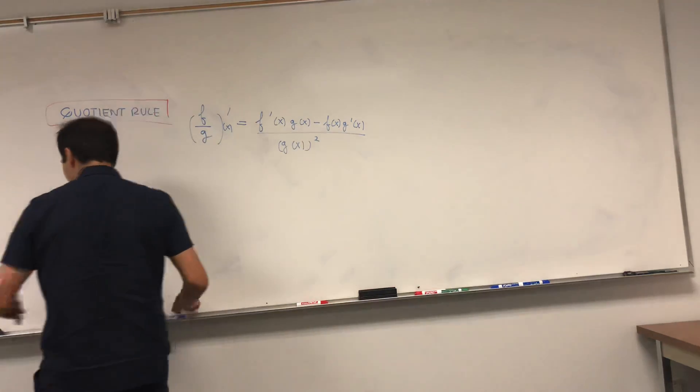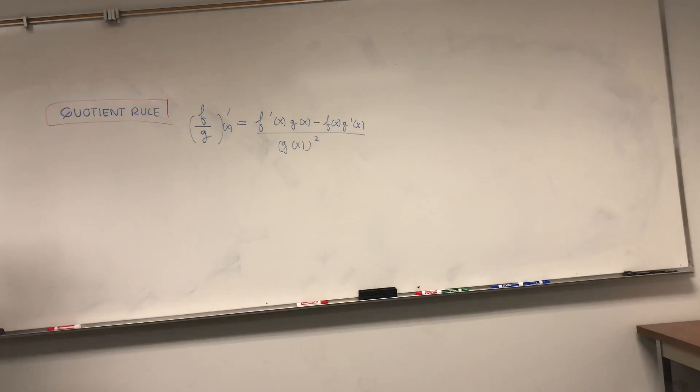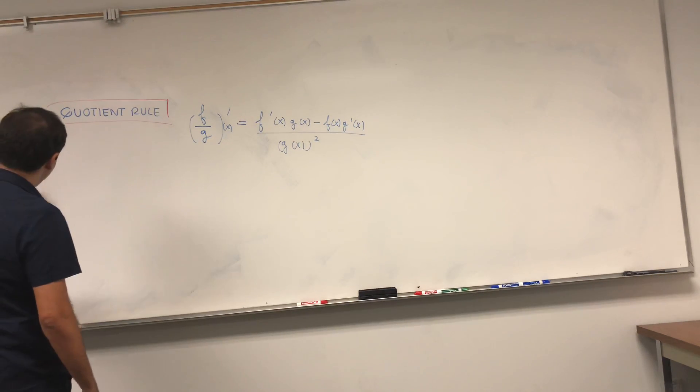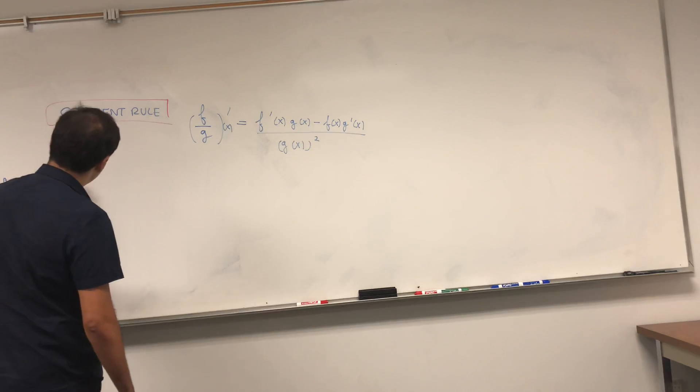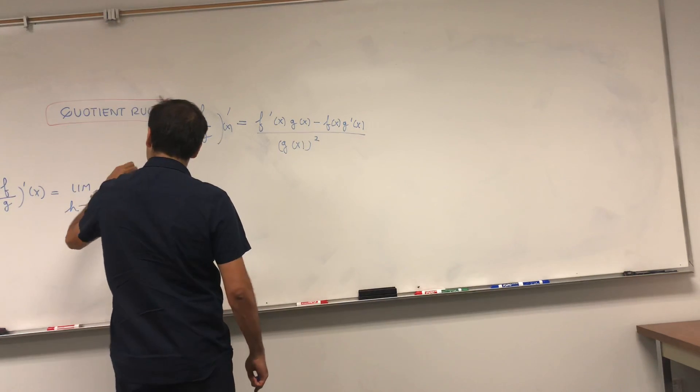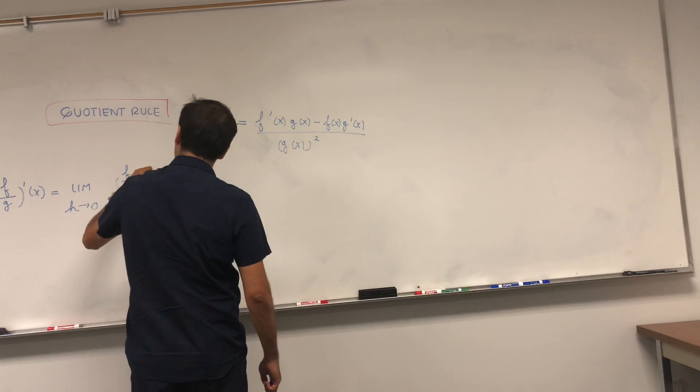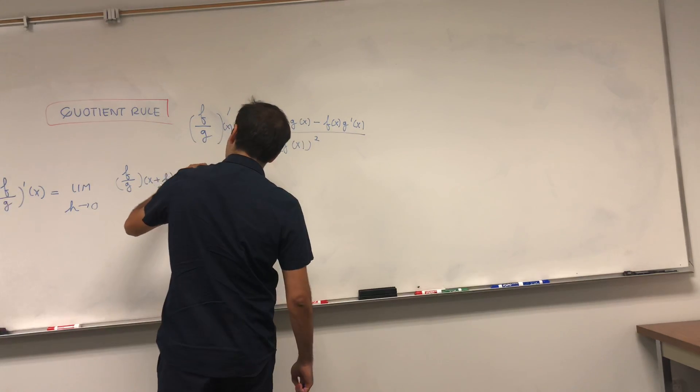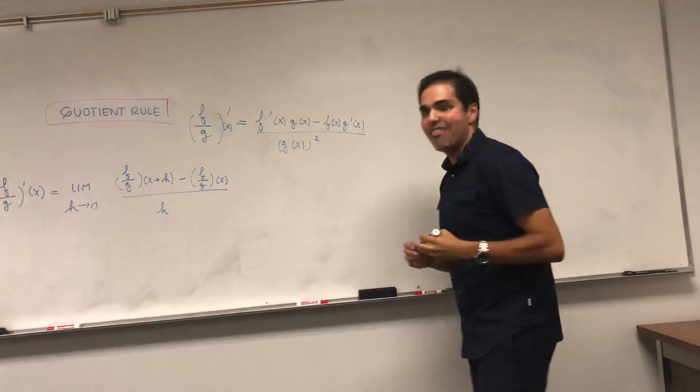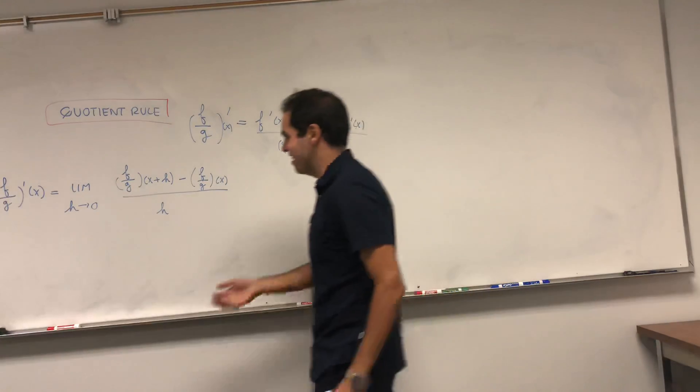It's actually a very cute thing, something hopefully we can prove in less than five minutes, but we'll see. So what is f over g prime of x? It's just the limit as h goes to zero of this function, so f over g of x plus h minus f over g of x over h. So that's just the definition of the derivative as a limit.